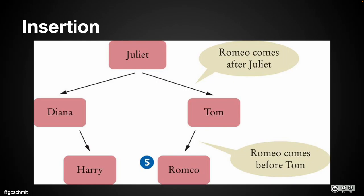Let's look at the next step: inserting an element. If we want to insert Romeo into the binary search tree — the same as adding Romeo to our TreeSet — we have to find where it goes. We use a similar algorithm to find: compare Romeo against the root. Romeo comes after Juliet so we go right. Romeo comes before Tom, but if Tom has no left child, that's where we put Romeo. We basically traverse the tree as if searching, until we find a null left or right child, then replace it with the new node.